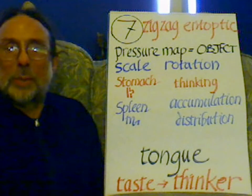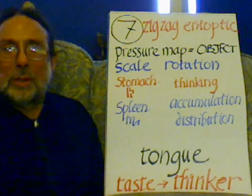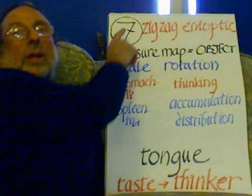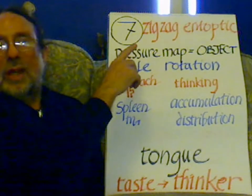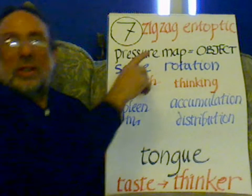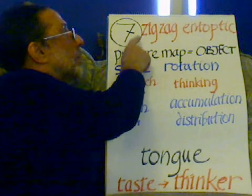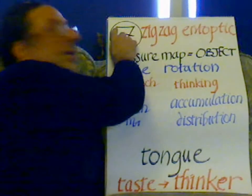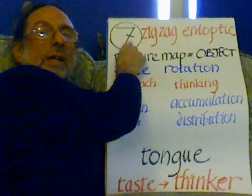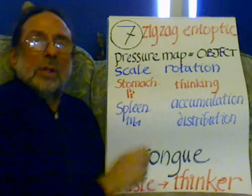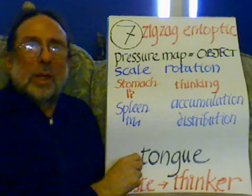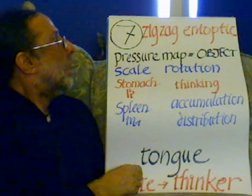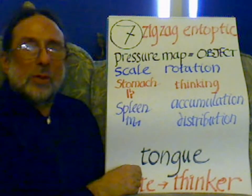The zigzag entoptic — the number 7. I went and did a French 7 with a stroke on it, but a proper 7 is a zigzag: a zig, a zag — a 7. It's the corner of an object. The zigzag entoptic.